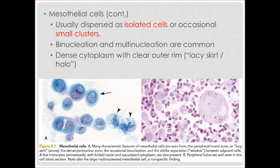Here, in figure A on the left image, you can see the appearance of the clear outer rim or lacy skirt in the mesothelial cell, as pointed by the arrow. The arrowheads in the same image are showing the peripheral vacuolation.